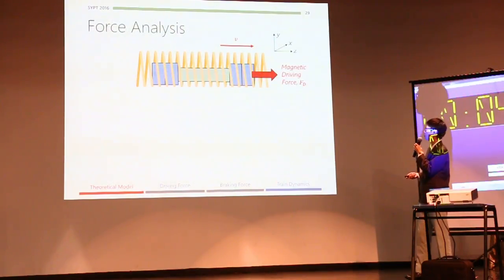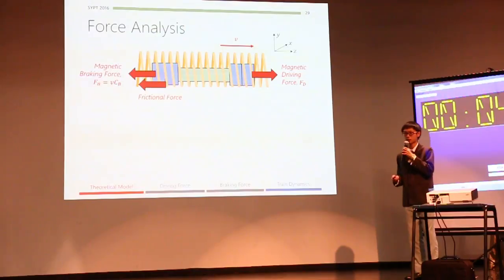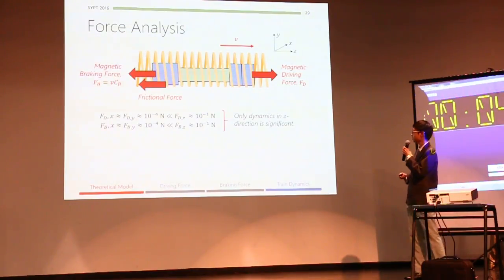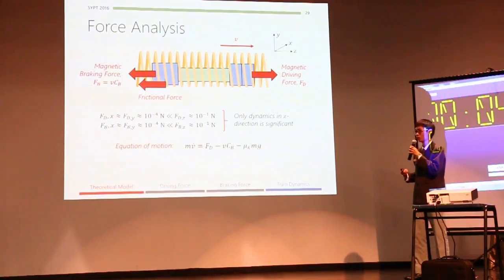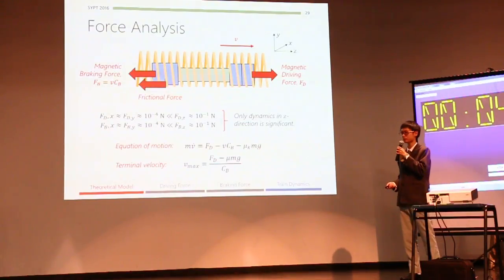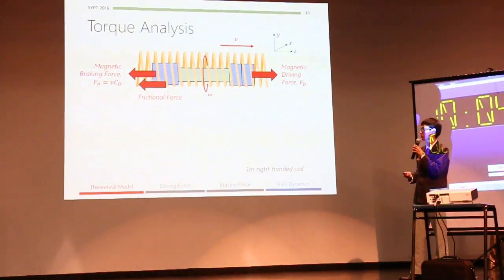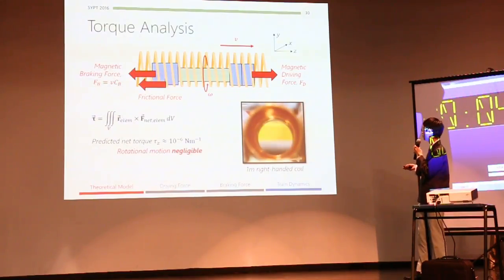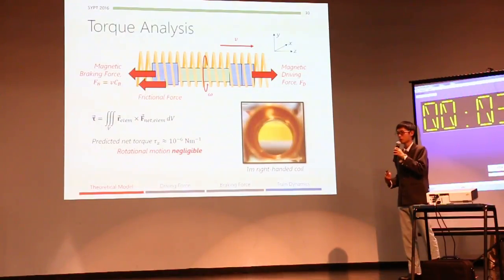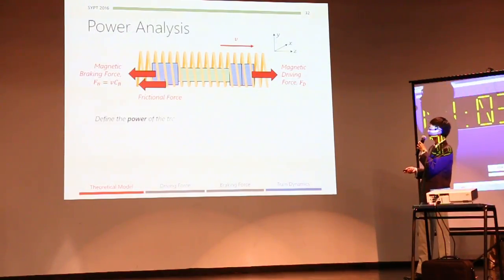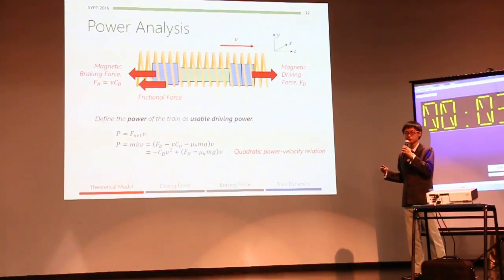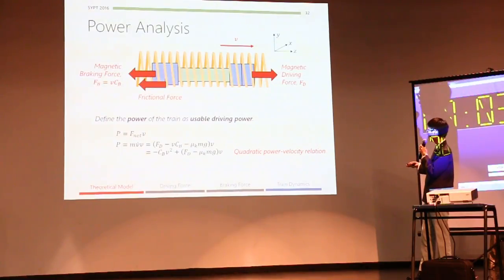Now, in summary, we have the magnetic driving force, braking force, and also friction on our train. We know that air drag is negligible, and that forces in x and y directions are also very small. This allows us to write the equation of motion as such, and by doing a force balance, we can write terminal velocity of the train as such. We know that from our theory, torque is calculated to be very small. And indeed, in our experiments, we observe no rotational motion of the train. Therefore, we can disregard rotational motion to only focus on linear motion of the train. And furthermore, we can define the power as useful driving power, and write the equation as such. And we can then simplify the math, and note this quadratic power-velocity relation.